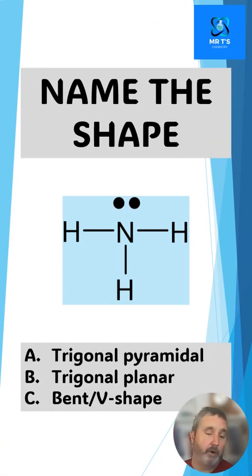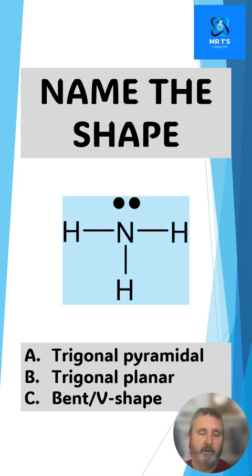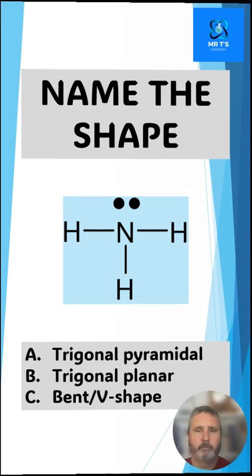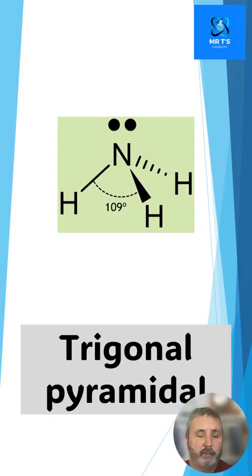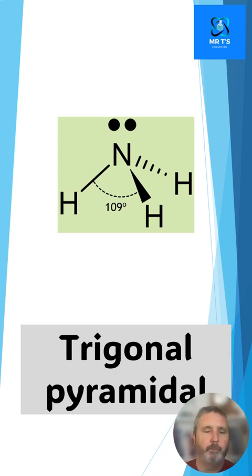Name the shape of ammonia. Is this shape A trigonal pyramidal, B trigonal planar, or C bent or V-shaped? This is a trigonal pyramidal shape because the basic shape of this molecule is tetrahedral — there are four electron density regions pushing away from each other. But because only three of the regions are bonding, we get this trigonal pyramidal shape.